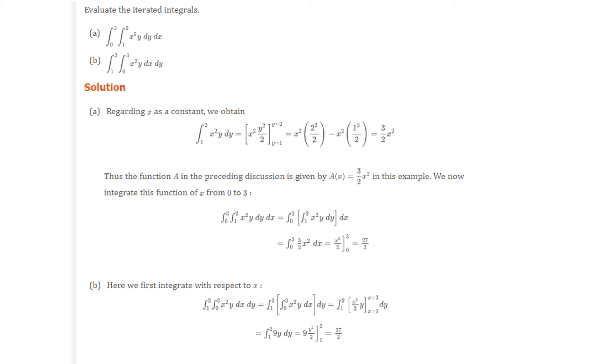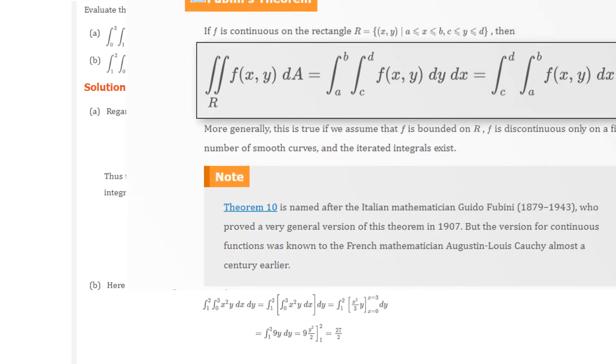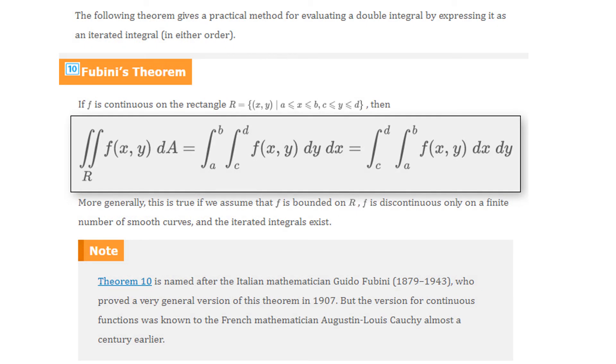And the answer is not always, but we have a theorem, and it's true much of the time. And in fact, the theorem that we have is called Fubini's theorem. And Fubini's theorem actually says quite a bit. It says whenever you have a continuous function on a rectangle, the double integral over the rectangle of F of x, y, dA is equal to the iterated integral. And you can do this either way as long as it's continuous on the rectangle. And more generally, this is true if F is bounded and it's discontinuous on only a finite number of smooth curves. And the iterated integrals exist.